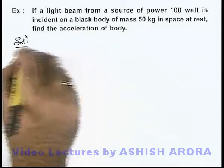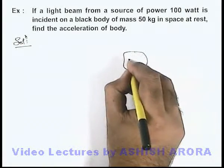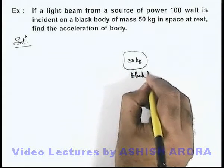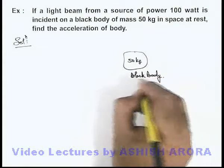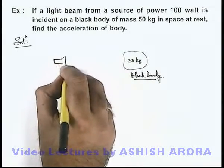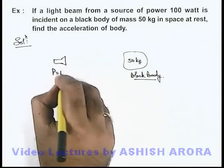Now in this situation, we are given this body which is of mass 50 kg, and we are also given that it is a black body. That means whatever radiation is incident onto it will be absorbed by it, and we have a source of power 100 watts.